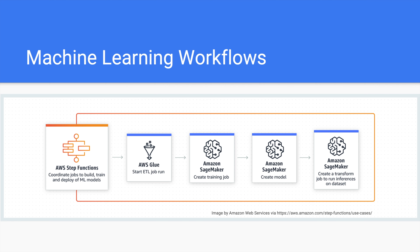And of course, you can use Step Functions for developing sequence steps of machine learning workflows. For example, in our illustration here, an AWS Glue job has been defined as a task to produce the data that will be processed by a series of Amazon SageMaker tasks, which is another step or task.